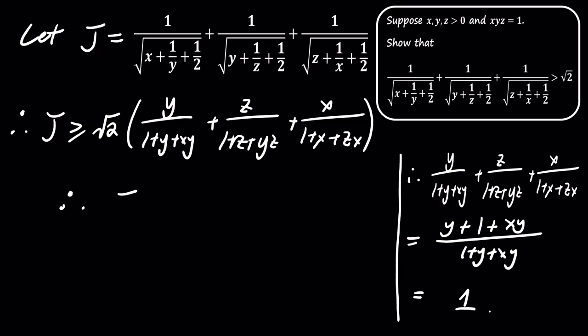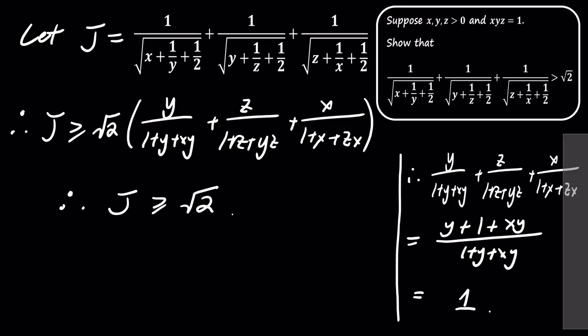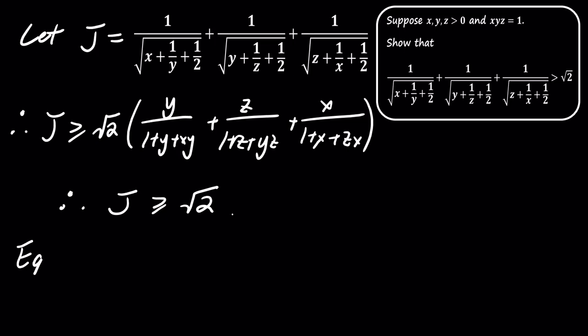This simplification gives us j is greater than or equal to the square root of 2. However, we need to show that j is strictly greater than the square root of 2, not just equal to it.